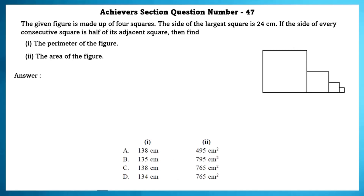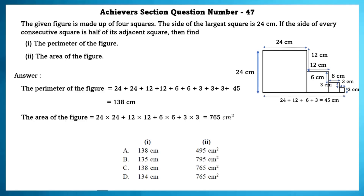Achieve section question number 47. The given figure is made up of 4 squares. The side of the largest square is 24 centimetres. If the side of every consecutive square is half of its adjacent square, find the perimeter and area of the figure. The sides are 24, 12, 6, and 3 centimetres. The perimeter of the figure is 138 centimetres and the area is 765 centimetres square.